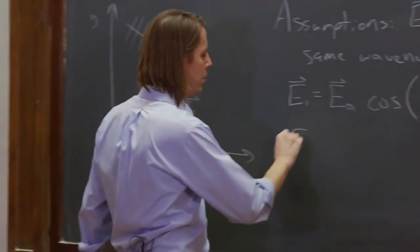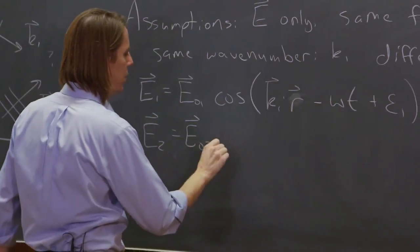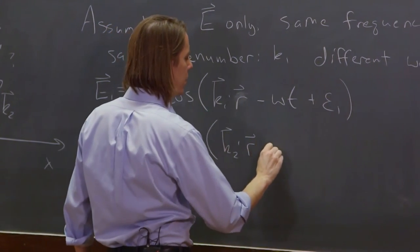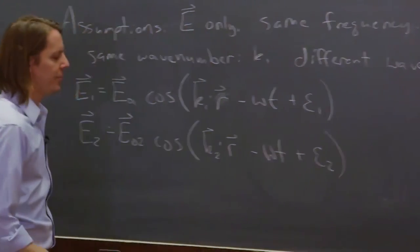And then we can write E2. E2 equals E naught 2 without all the discussion. Cosine K2 dot R minus the same omega t, and it could have some phase, epsilon 2.